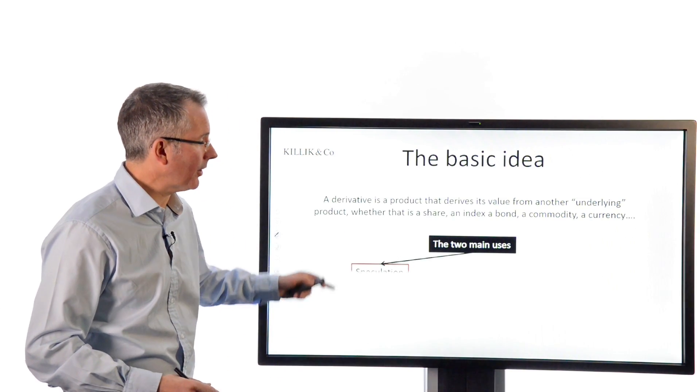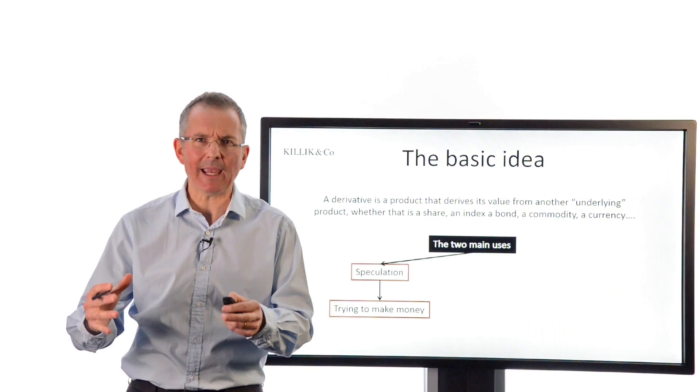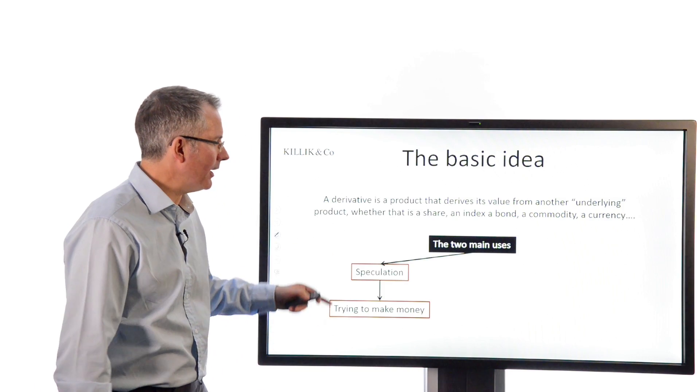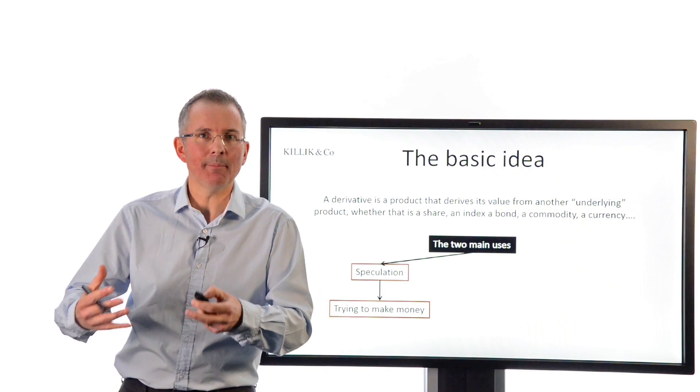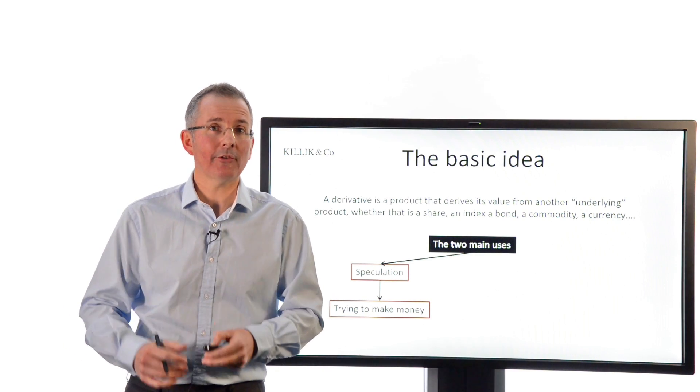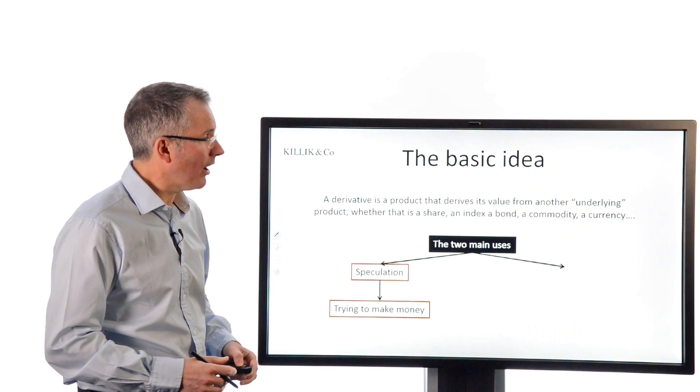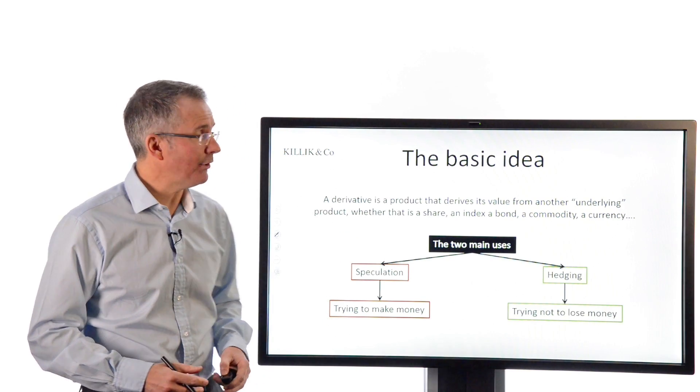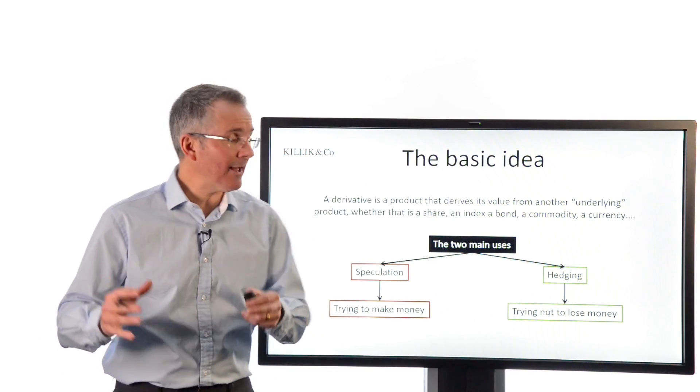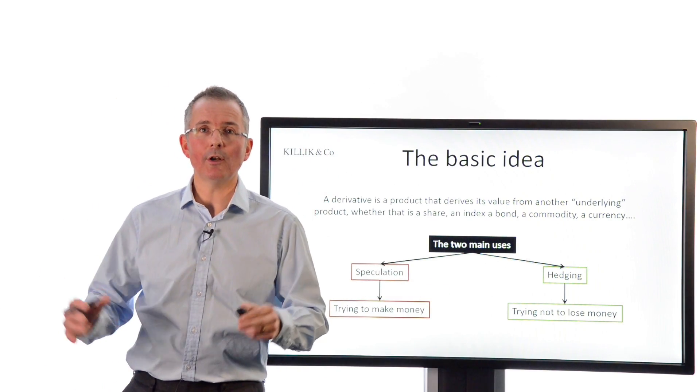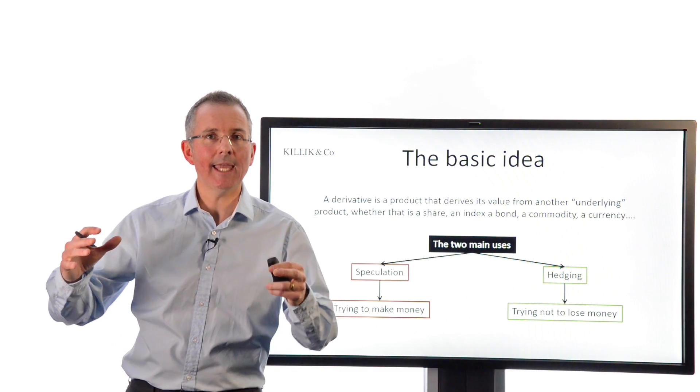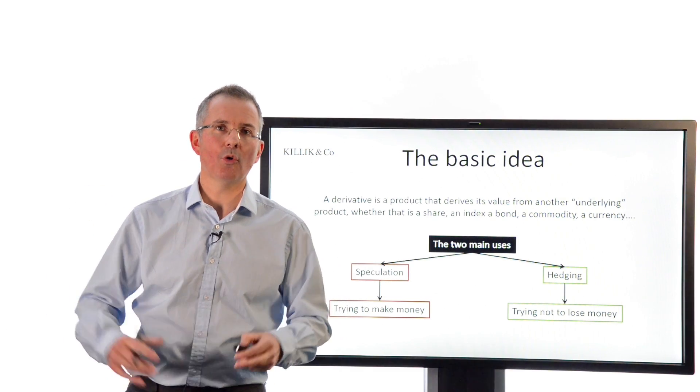There are two uses, and there's one on the left that gets all the press. Speculation. Derivatives can be used to make a lot of money, and they're geared, so you get a lot of bang for your buck. That's the bit where the press tends to focus. On the right-hand side, there's a perfectly safe use for derivatives, which is hedging. That's the exact opposite. That is reducing risk and trying to avoid losing money. I want to convey both of those sides.